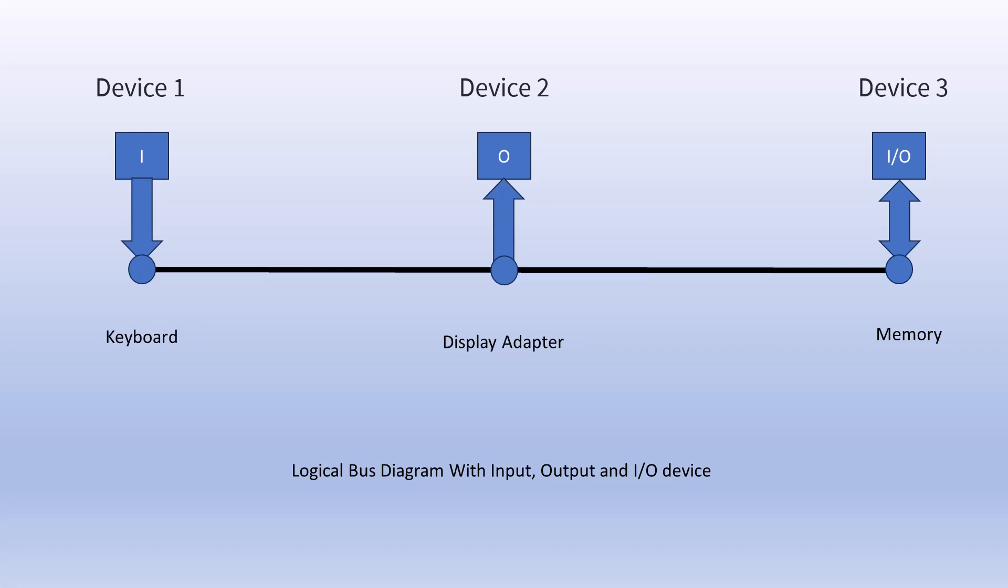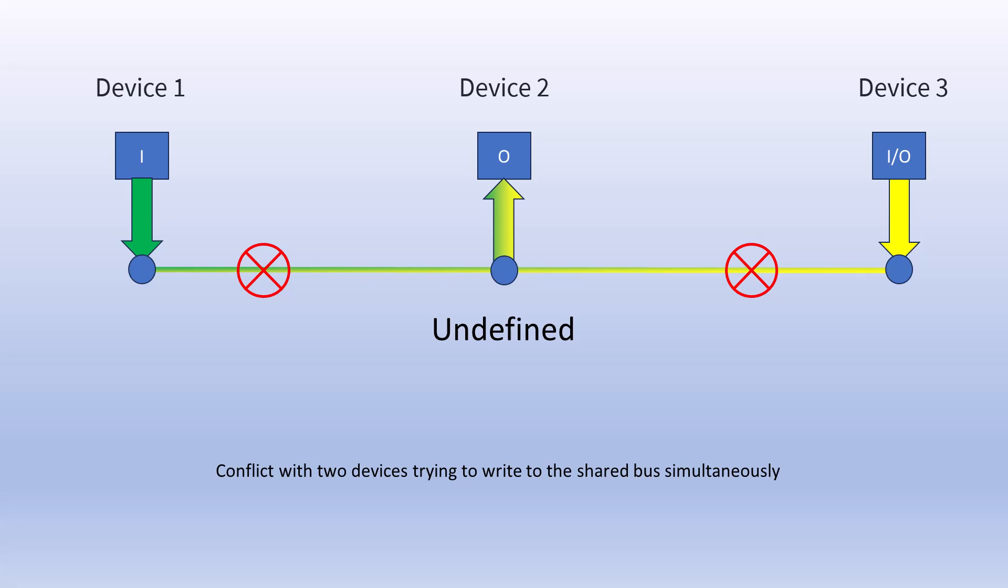So what happens when two devices try to write to the shared bus simultaneously? We get contention on the bus and an undefined state for data trying to be read from the bus. This is bad and will likely cause unexpected results.